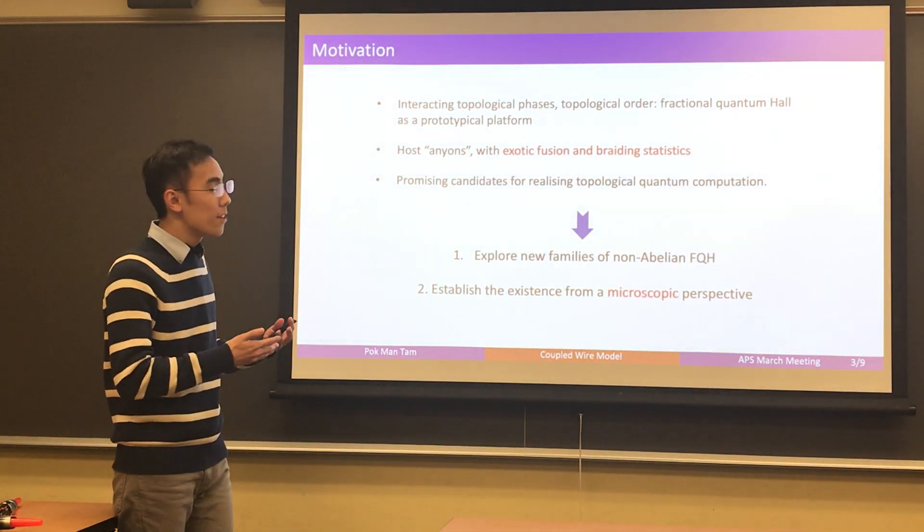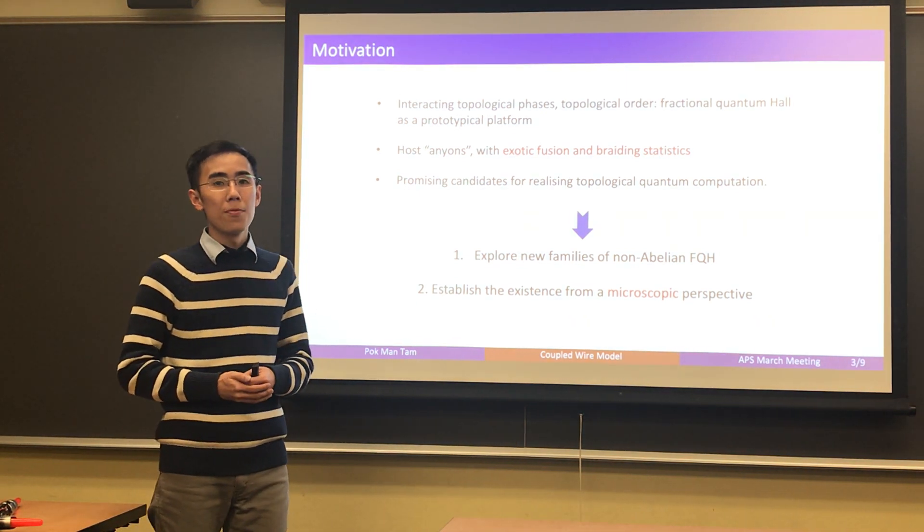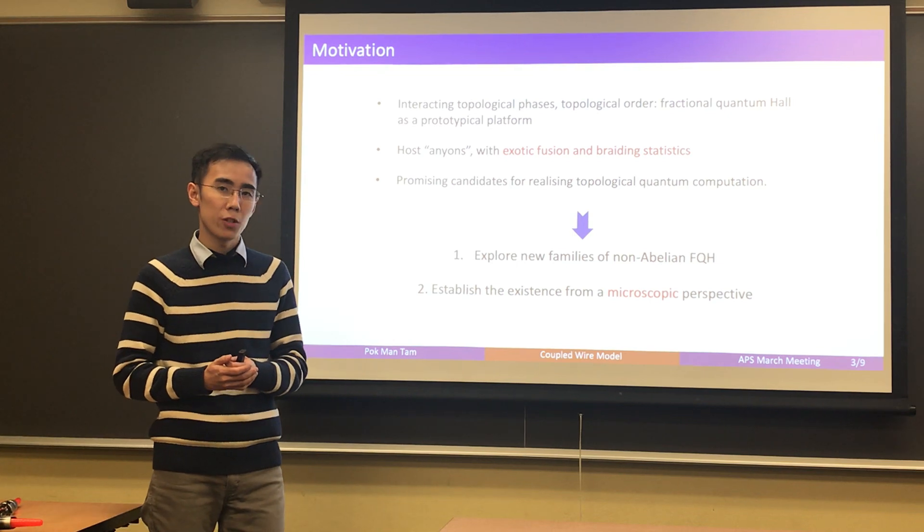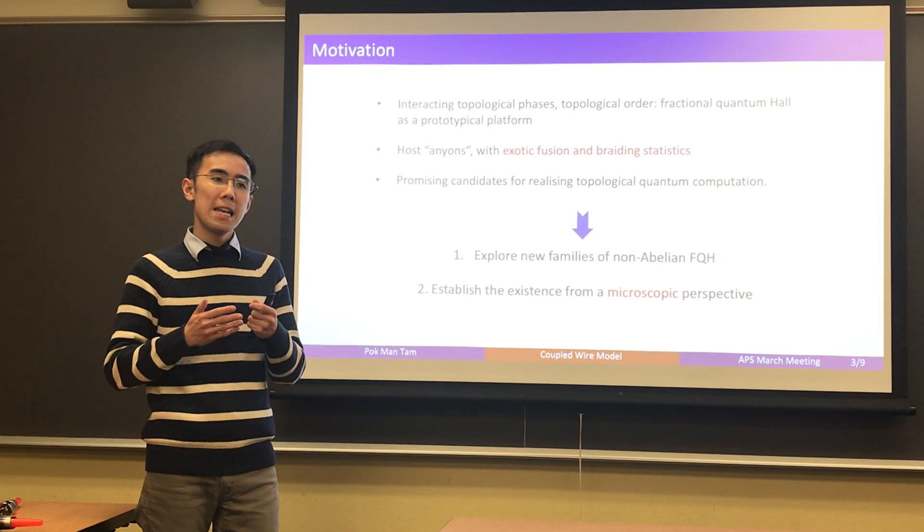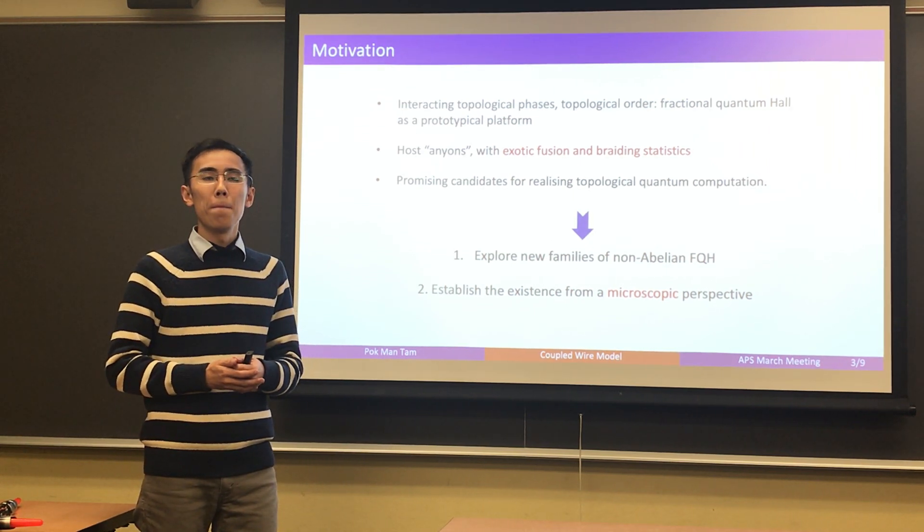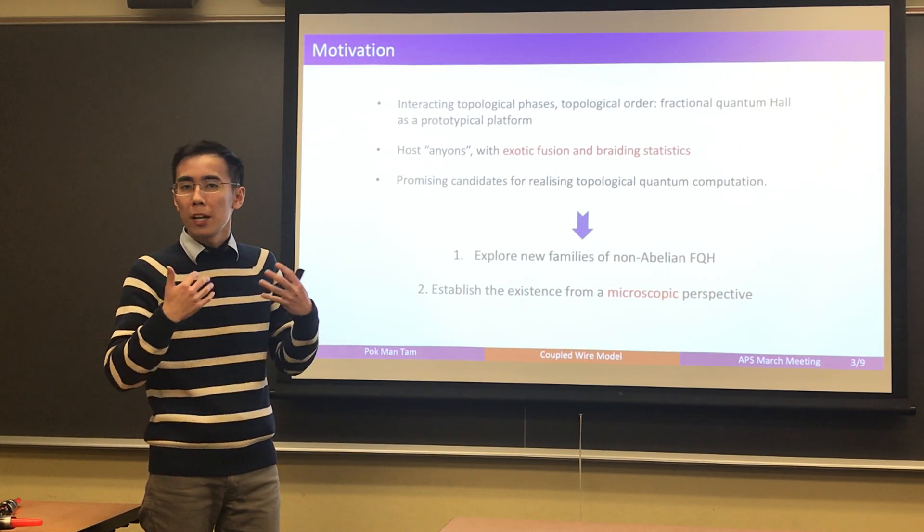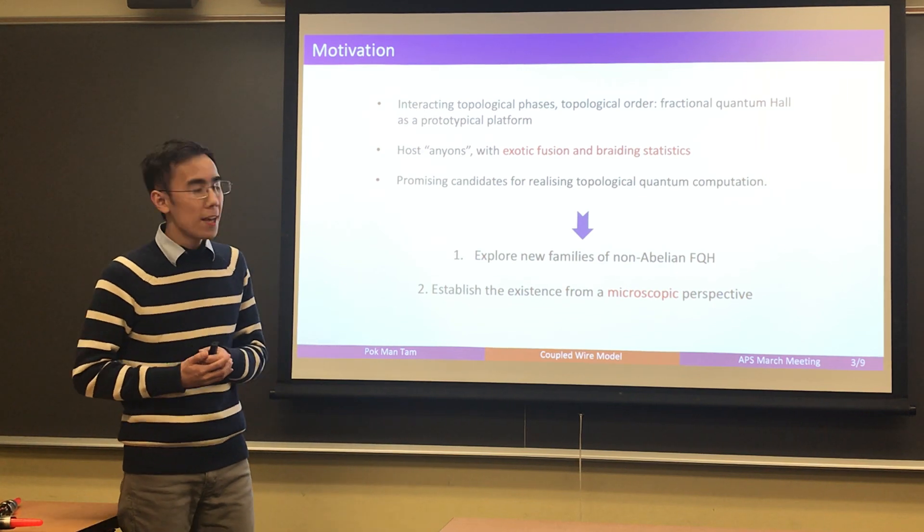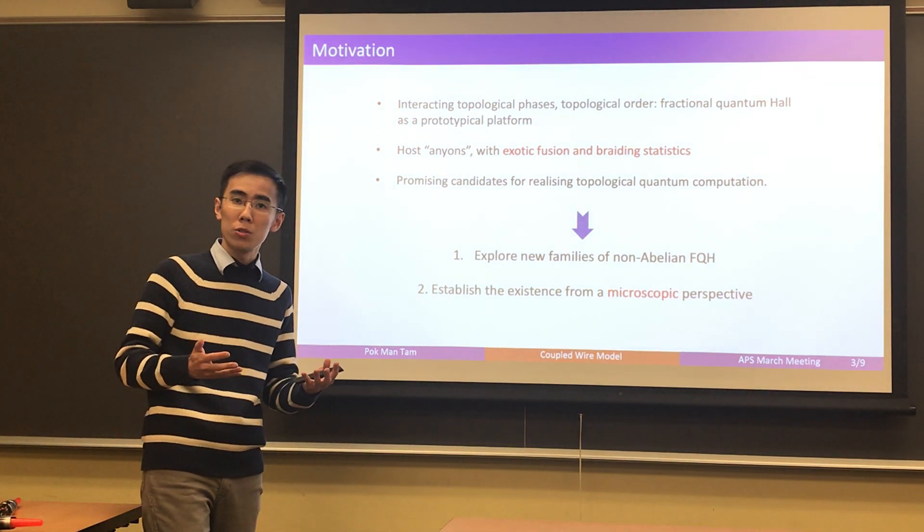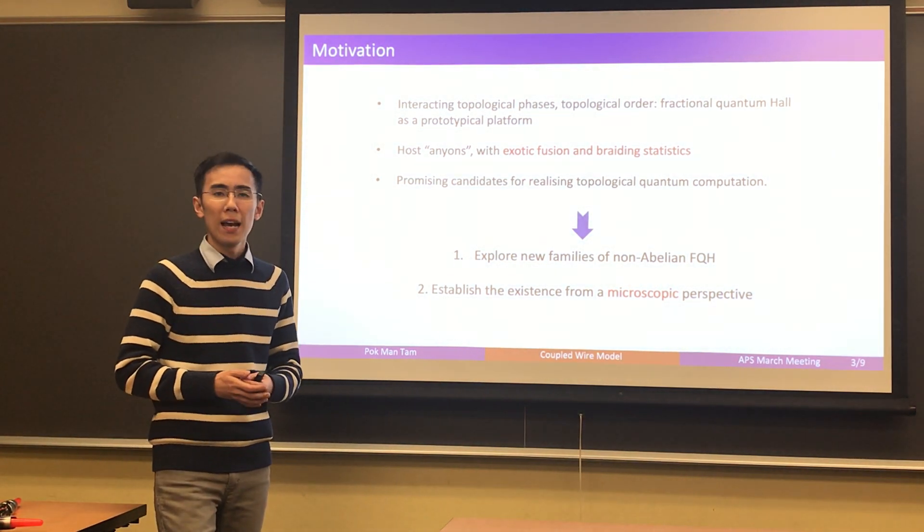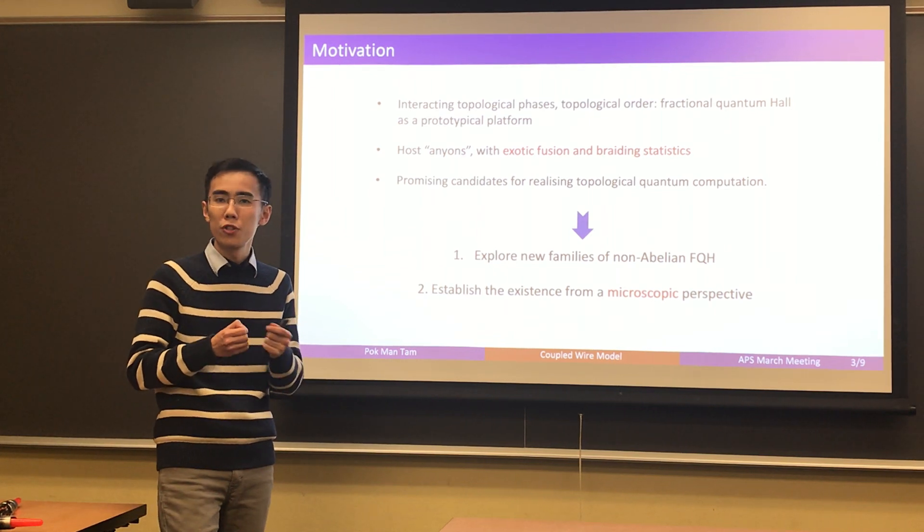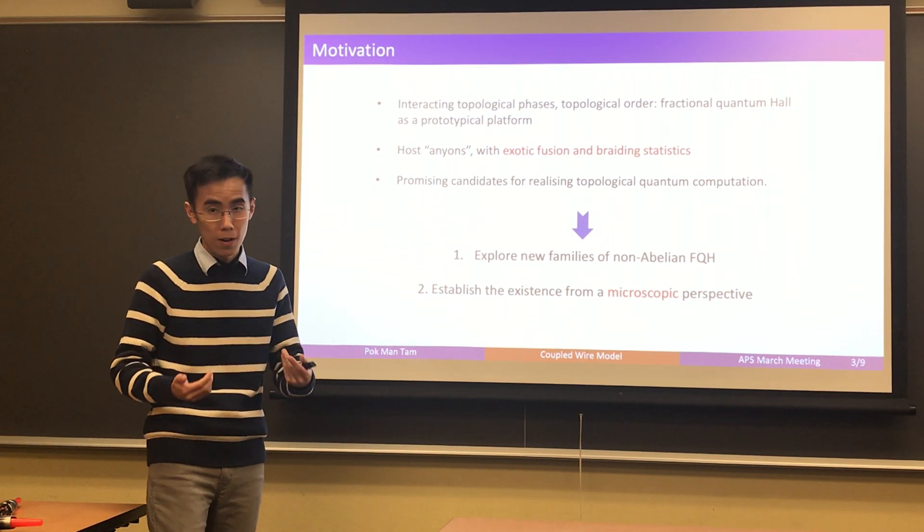So with these nice states of course the more the merrier and that's why we set off in search of new families of non-abelian fractional quantum Hall states. And equally important we want to establish the existence of some of these states at a firmer footing from a microscopic perspective. By saying that I actually mean some of these non-abelian states were first proposed from a field theory perspective and relation to electrons is actually not clear. We're actually not clear whether electrons can do the job of producing these nice non-abelian states.